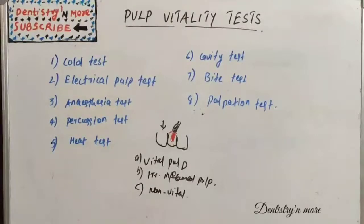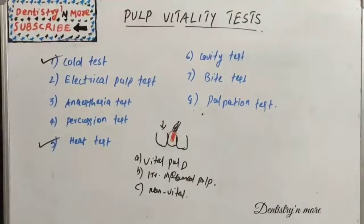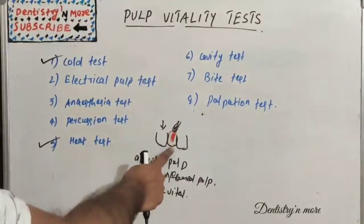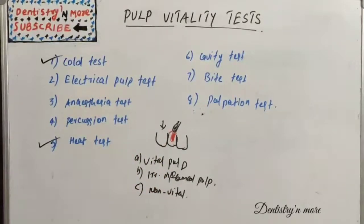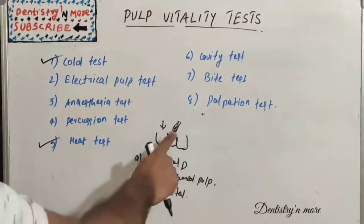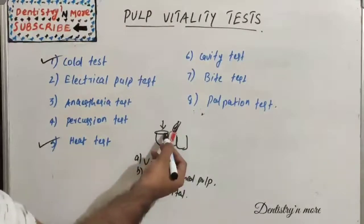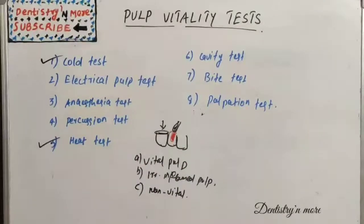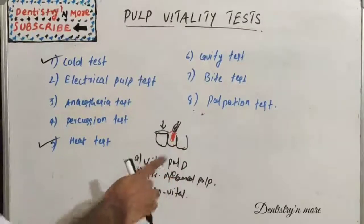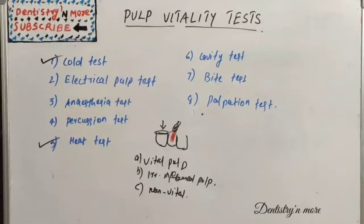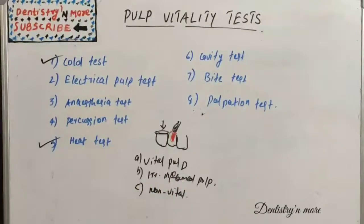Next we have the heat test, which follows the same mechanism — we start with the adjacent tooth. We place a hot instrument such as a burnisher, or hot material such as heated gutta-percha, over the cervical third of the tooth. Again there are three responses: immediate pain for one to three seconds indicates vital pulp; immediate severe pain lasting several minutes indicates irreversibly inflamed pulp; and no pain indicates a non-vital tooth.